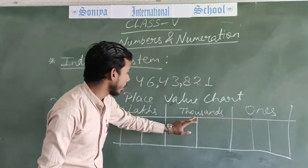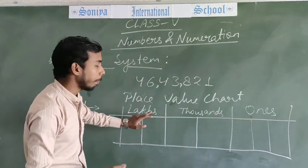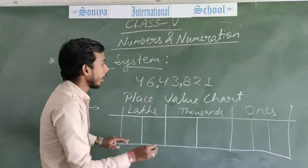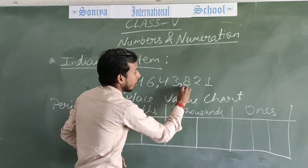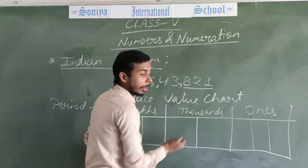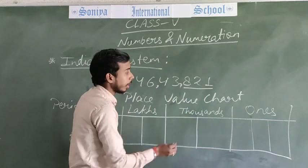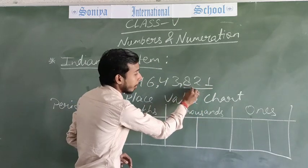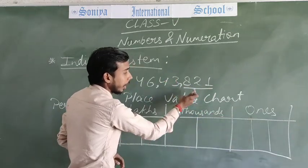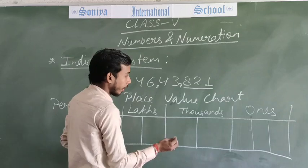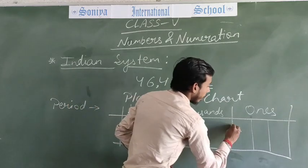Okay. First period, thousands period, last period — this is a period. Which is which period? The first period is the ones period.